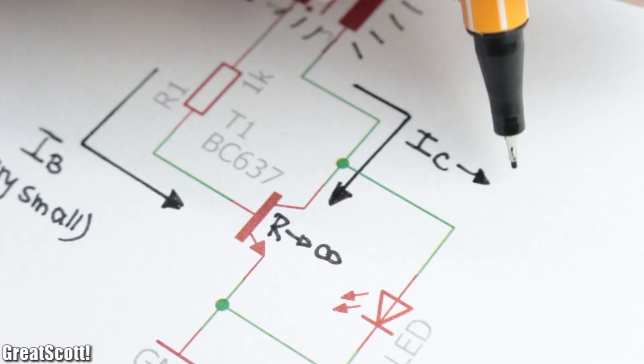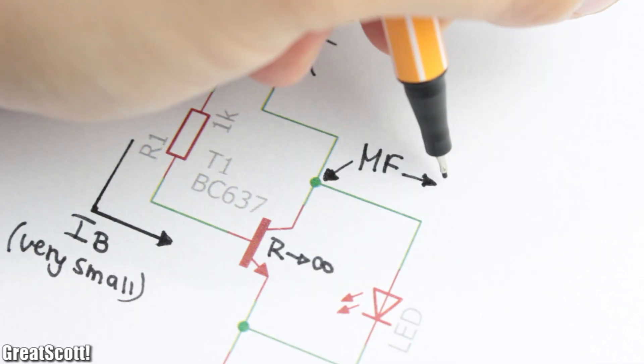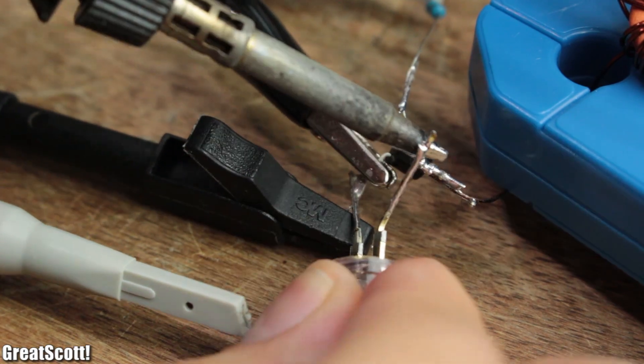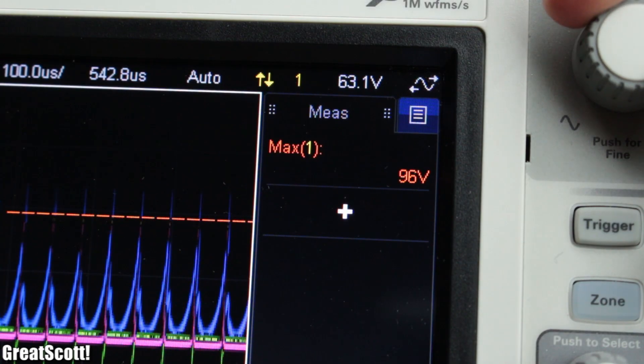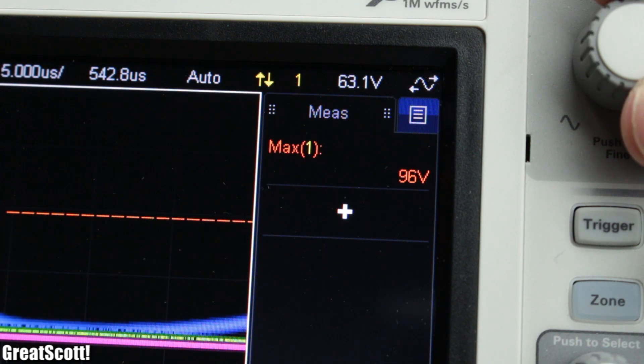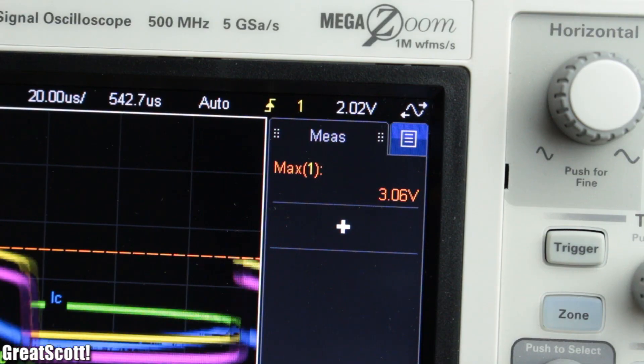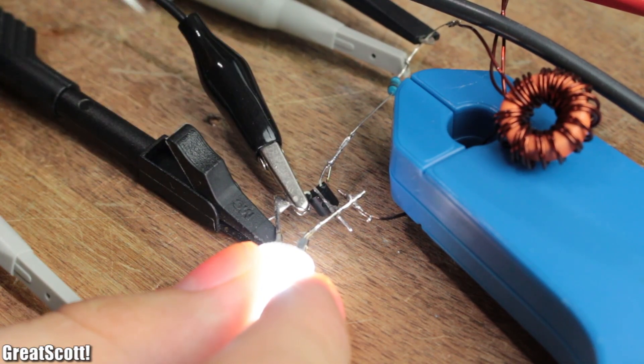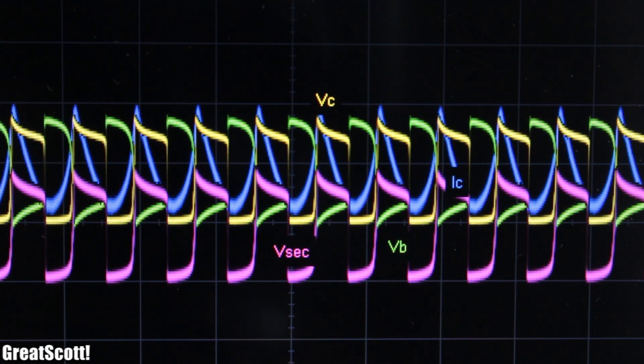Practically no collector current can flow anymore, but the energy of the primary coil's magnetic field needs to dissipate. The result is an overvoltage of around 94 volts at the collector if no load is connected, or around the forward voltage of my LED if I connect it between the collector and emitter. This cycle then repeats all over again.